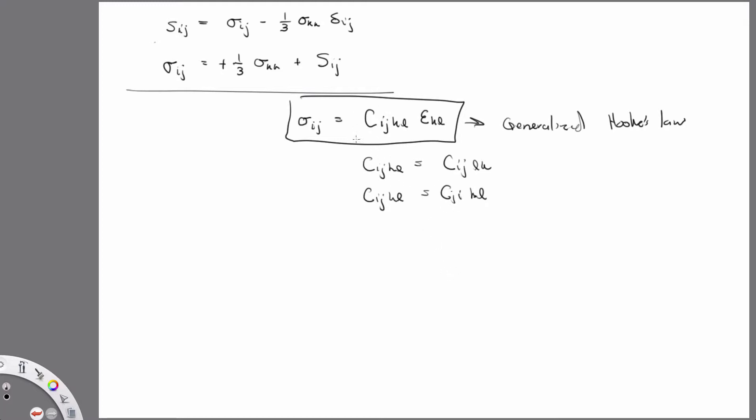And then also, because of the way we define C as the partial derivative of some strain energy density functional, the order of this differentiation here doesn't matter, right? I can take the derivative with respect to ij first or the derivative with respect to kl first. And so that then imposes a major symmetry on the indices so that Cijkl equals Ckl ij.